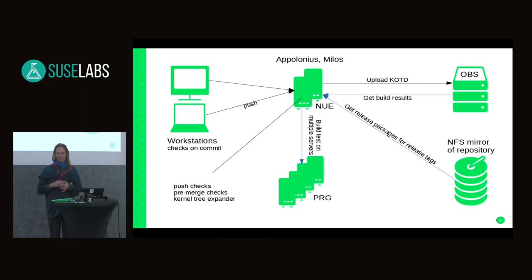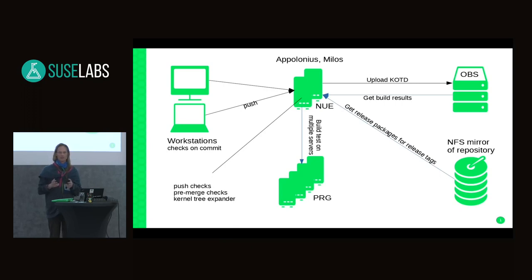Another issue is that internal NFS mirrors no longer carry OpenSUSE packages, so we don't have tags for OpenSUSE kernels because there are no RPMs to extract. We could use official mirrors, but they aren't supplied by SUSE — they're supplied by random people — and we'd have to write scripts to verify signatures on the packages before using them, which we didn't need before with our internal mirror.